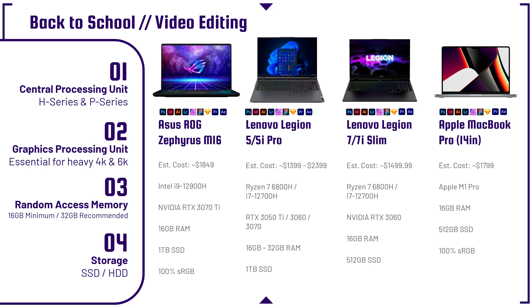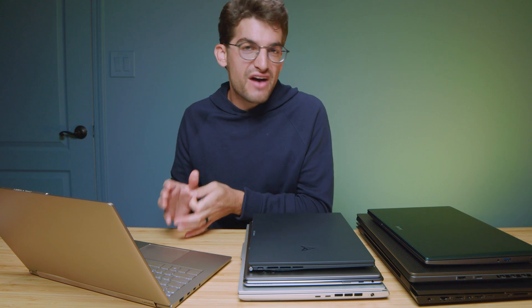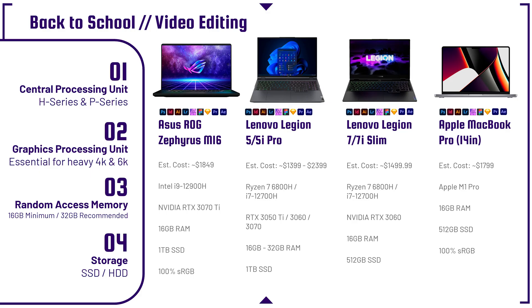The Asus ROG Zephyrus M16 is a killer laptop at a great price point for that much performance — it has an i9-12900H and RTX 3070 Ti with 8 gigs of VRAM, truly a beast. The Lenovo Legion 5 Pro and 5i Pro have been among the best laptops of the past few years — so much performance and so well optimized, just a little chunky. The M16 is more simplistic in design while the 5i Pro is a bit more gamer-oriented with some extra frills. The Lenovo Legion 7 and 7i Slim are also favorites — great performance, really on-the-go friendly.